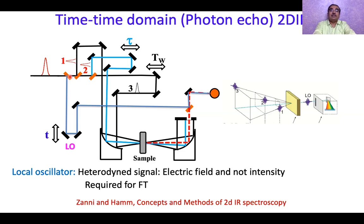The local oscillator is associated with its own delay time. So what you have is a little more complex Fourier transformation involving all these delay times — that is what finally gives you the 2D IR spectrum. And why would we do it? Because there is more to 2D IR. Polarization, decoherence — these are very important things, and all these things can be understood when we incorporate this little bit of complication in this technique.